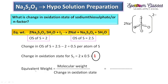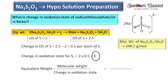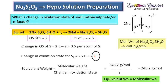Now coming to the calculation of equivalent weight. Equivalent weight equals molecular weight divided by change in oxidation state for redox compounds. The molecular weight of sodium thiosulfate is 248.2 and its change in oxidation state is 1. So the equivalent weight equals the molecular weight, which is 248.2.